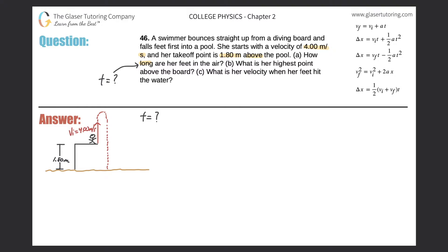If we had to frame out the problem, we'd want to think about what is the initial point and what is the final point. His feet are in the air this whole path, so this represents the initial point and this represents the final point. We do know the velocity at the initial point — that velocity is 4.00 meters per second.